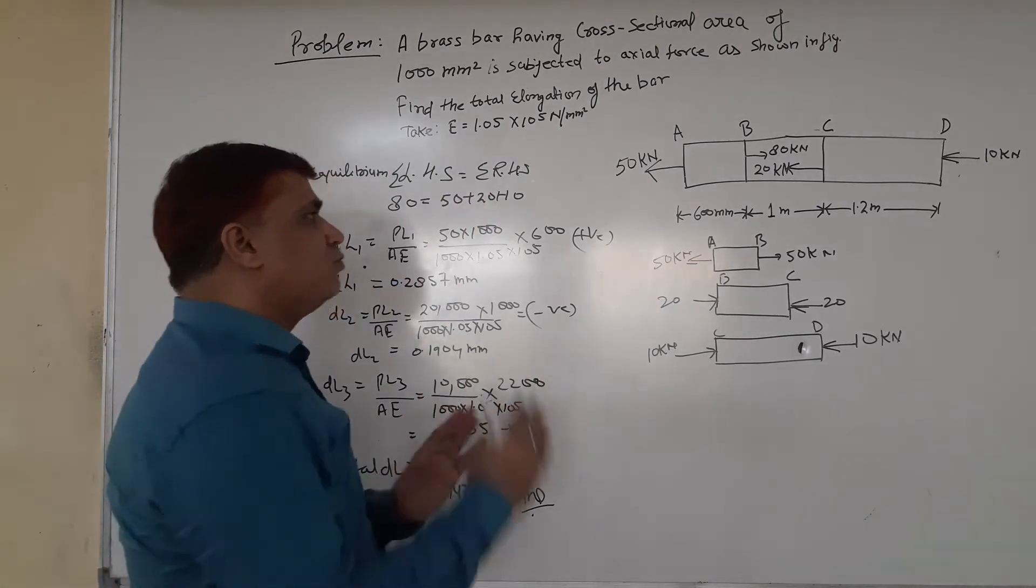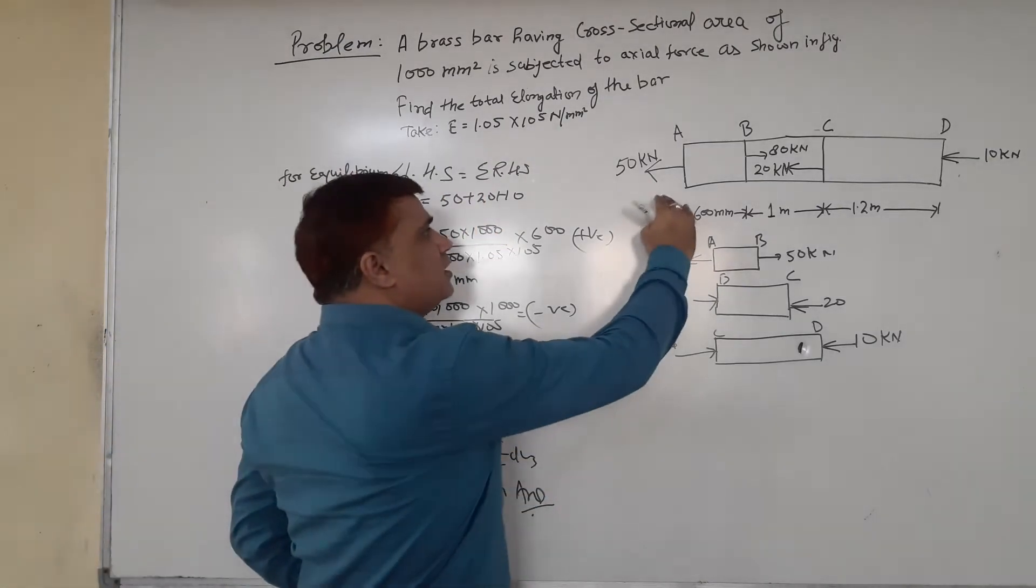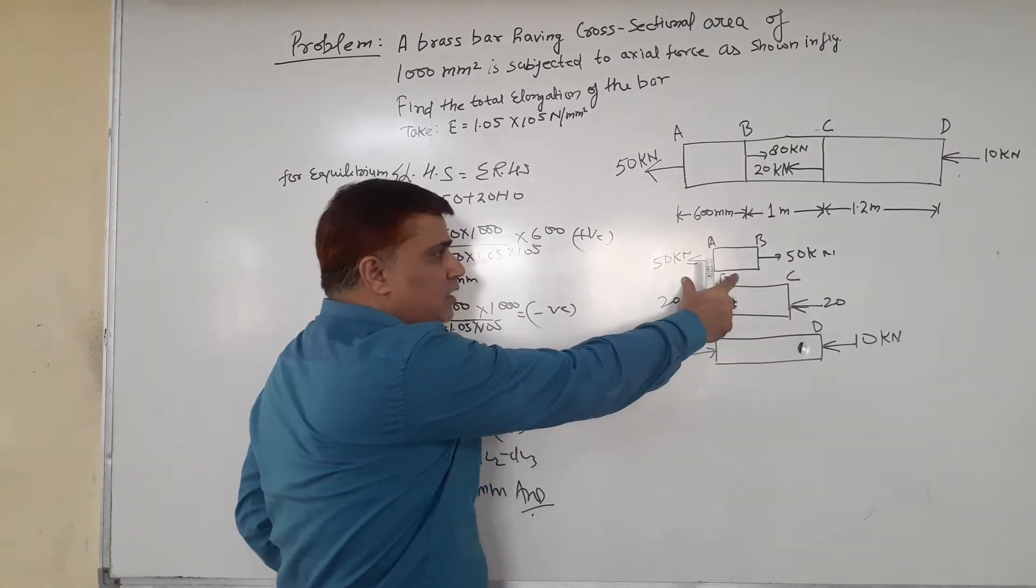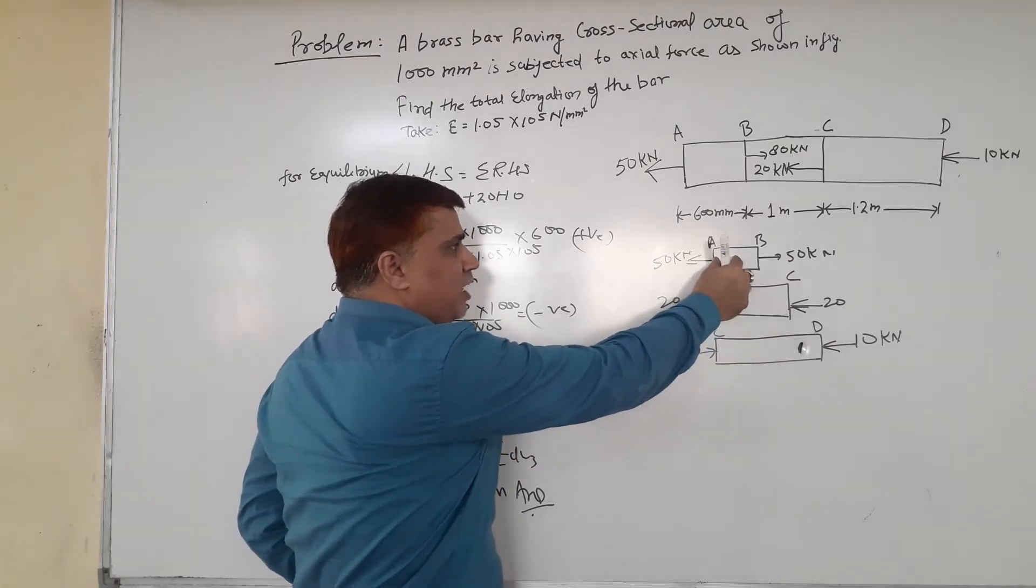We have to break it into three sections: AB, BC, and CD. First, we consider the first section, AB.